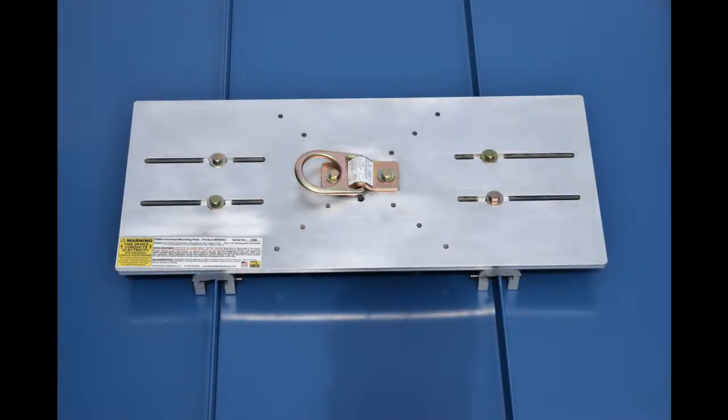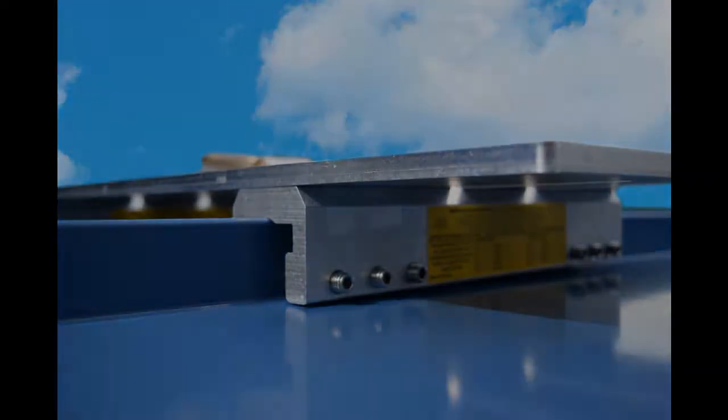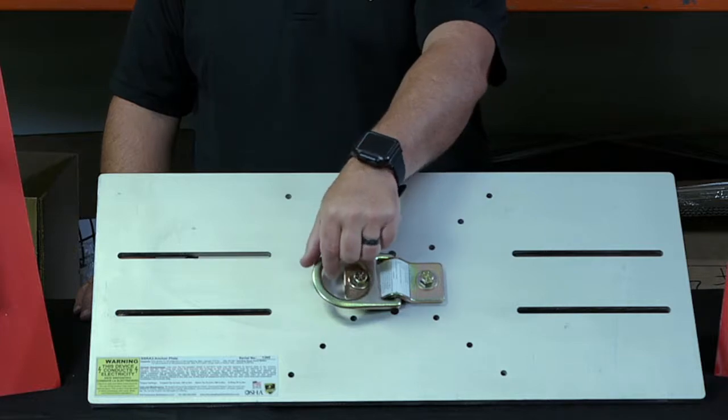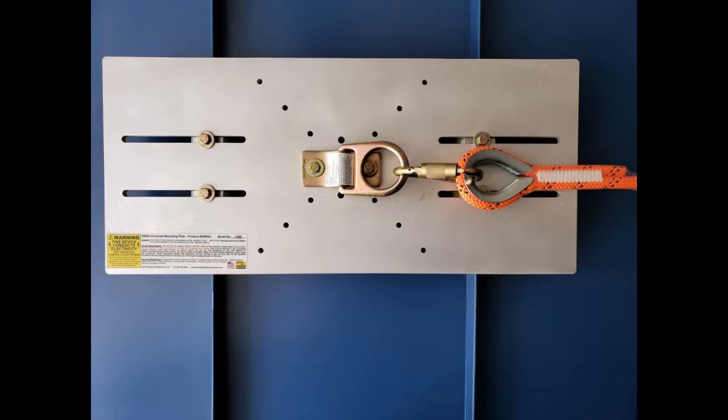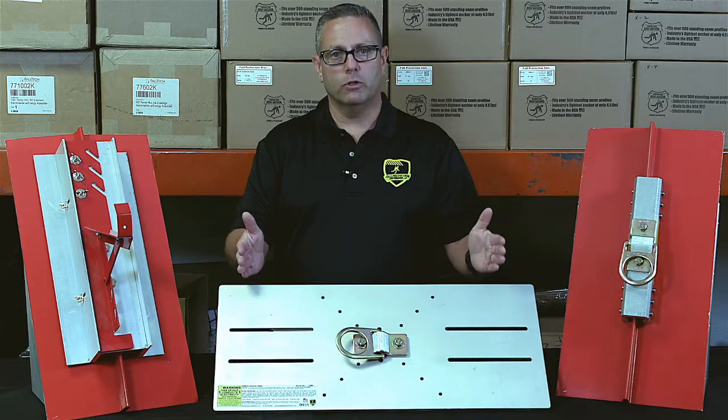You're going to have two anchor bodies mounted underneath this plate, and then hook your horizontal lifeline to this D-ring. The D-ring can be articulated vertically or horizontally, but for horizontal lifeline, this is the setup you're going to have, mounted on top of two anchors.